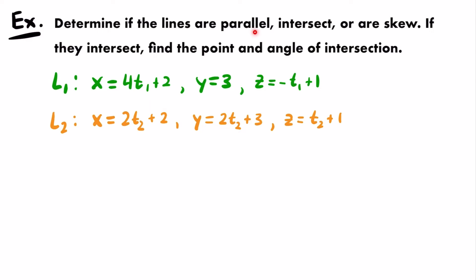Next, we want to determine if two lines are parallel, intersect, or are skew. If they intersect, find the point and angle of intersection. We have two lines given as parametric equations. In 3D space, two lines can be parallel, intersect at one point, or be skew — meaning not parallel and not intersecting. We first check if the lines are parallel by comparing their direction vectors.